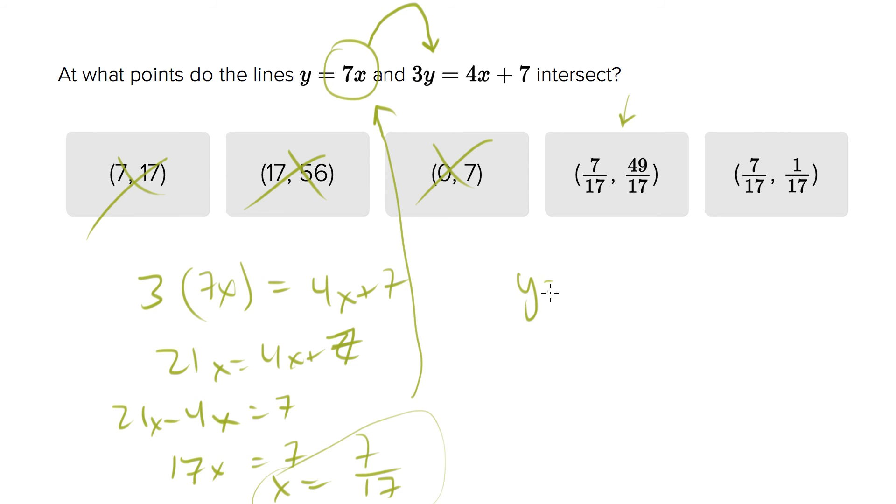y equals 7 times 7 over 17, and you get y equals 49 over 17. So it's supposed to be answer B. Whoops, I don't know why I circled that answer. Fourth answer choice.